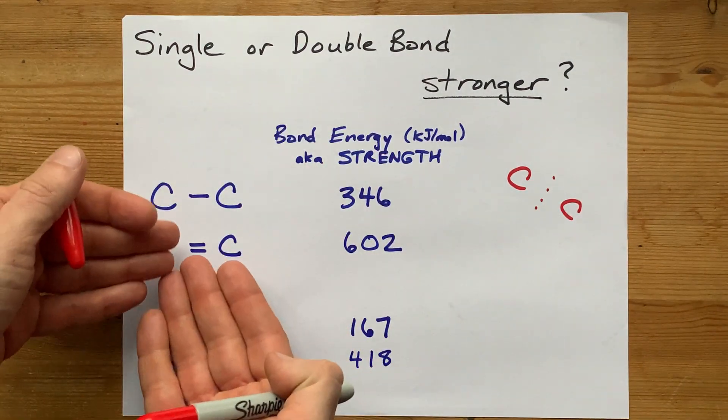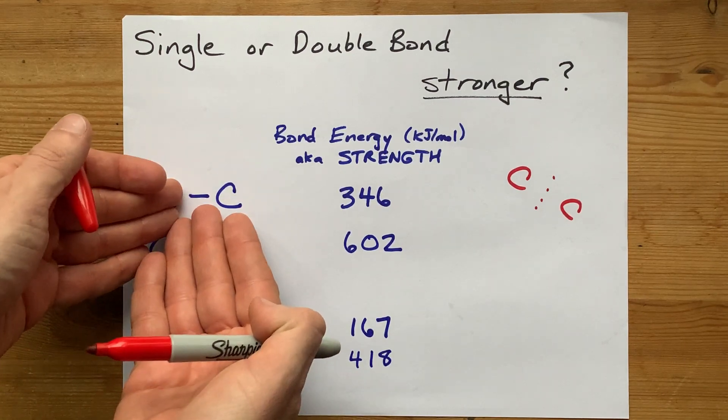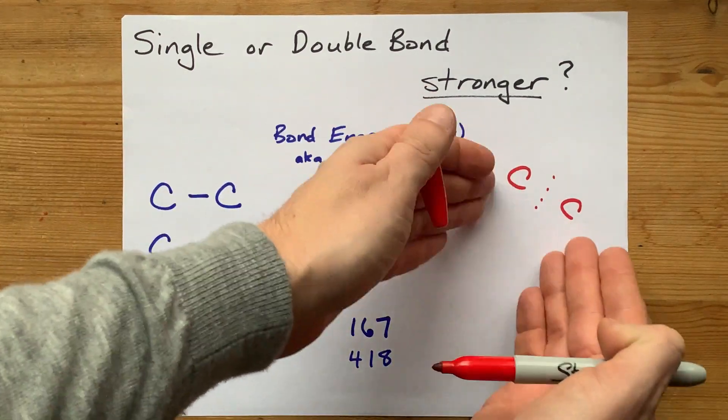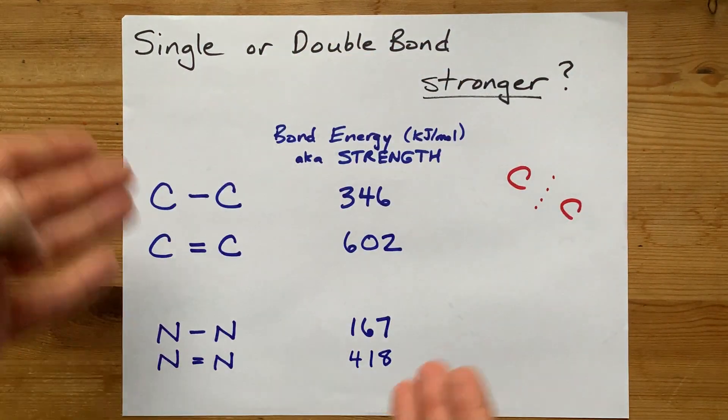The point is, a higher bond order, like two compared to one, means that there's more glue holding the nuclei together. And therefore, it takes more energy to pull them apart. It's a stronger bond.